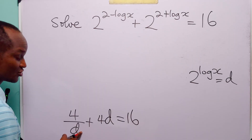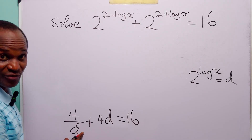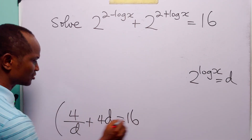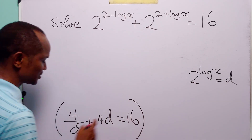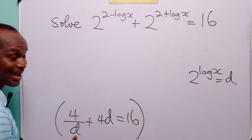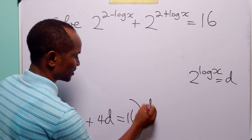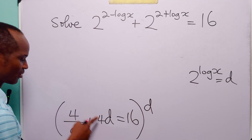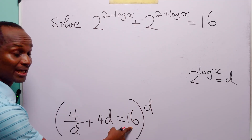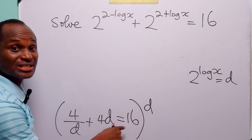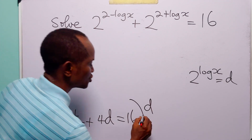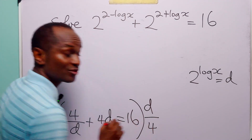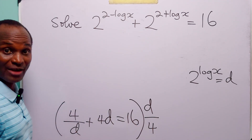To get rid of the fraction and simplify the equation, we are going to multiply through by d. Notice that we have 4, 4, and 16, which is a multiple of 4. So we will also divide through the equation by 4.